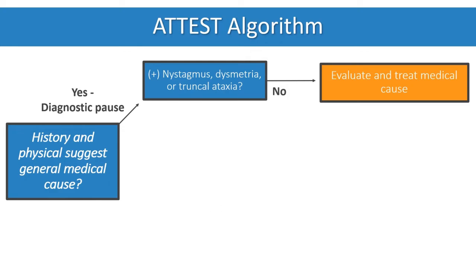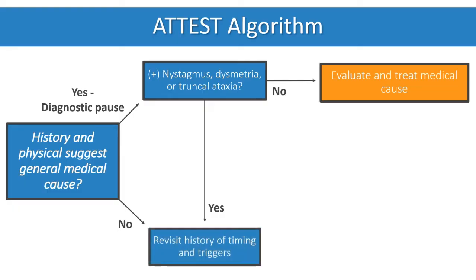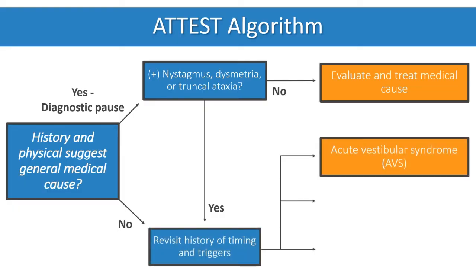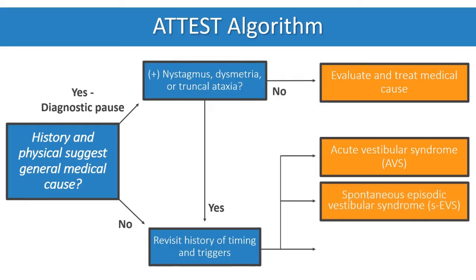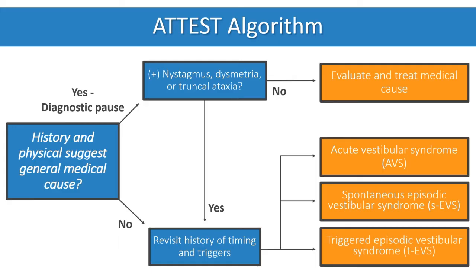For patients with a positive diagnostic pause or without medical cause, history of timing and triggers can divide them into three categories: acute vestibular syndrome, spontaneous episodic vestibular syndrome, and triggered episodic vestibular syndrome.